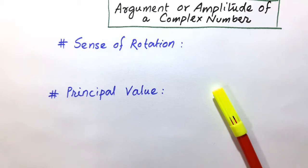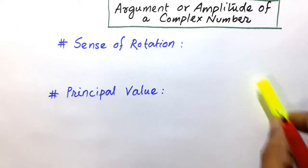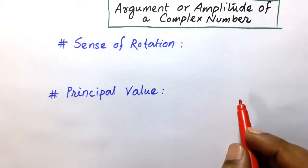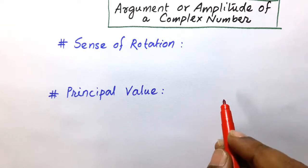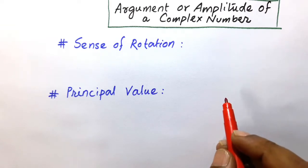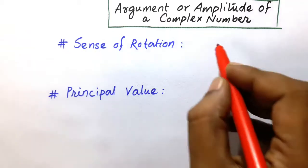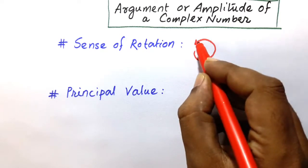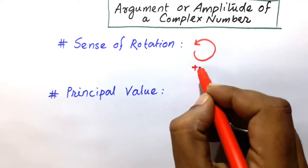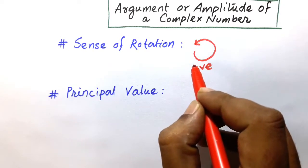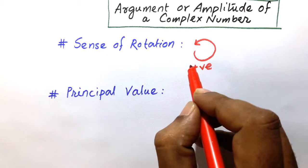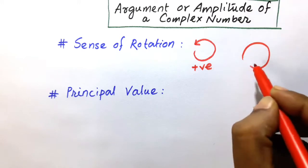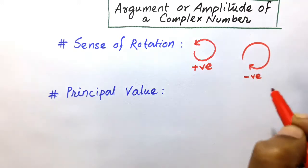The first basic thing is the sense of rotation. The amplitude of a complex number is always positive when the measurement of inclination is anticlockwise — this is the positive direction. And the amplitude of a complex number is always negative when the measurement of inclination is in the clockwise direction — this is the negative direction.